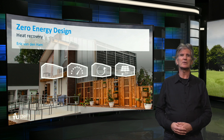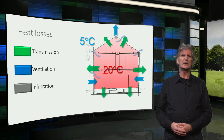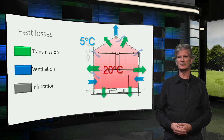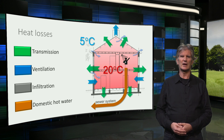In this video we will look at some examples of heat recovery in buildings. First, let's go back to the heat losses in a building. They consist of transmission losses and ventilation losses. On top of that, the heat from the domestic hot water, like the water from the shower, goes literally down the drain.